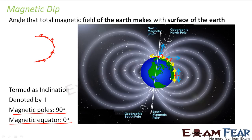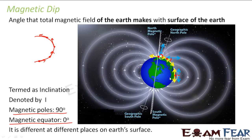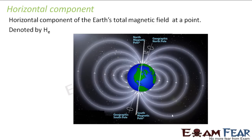I hope you understood what is magnetic declination and what is magnetic dip, and how they vary from equator to poles. Now let us look at the third element, that is the horizontal component. From this we conclude that magnetic dip is different at different places on the earth's surface, because at different places the direction of the earth's surface will also change, and the direction given by the magnetic needle will also change — therefore the dip will also change.